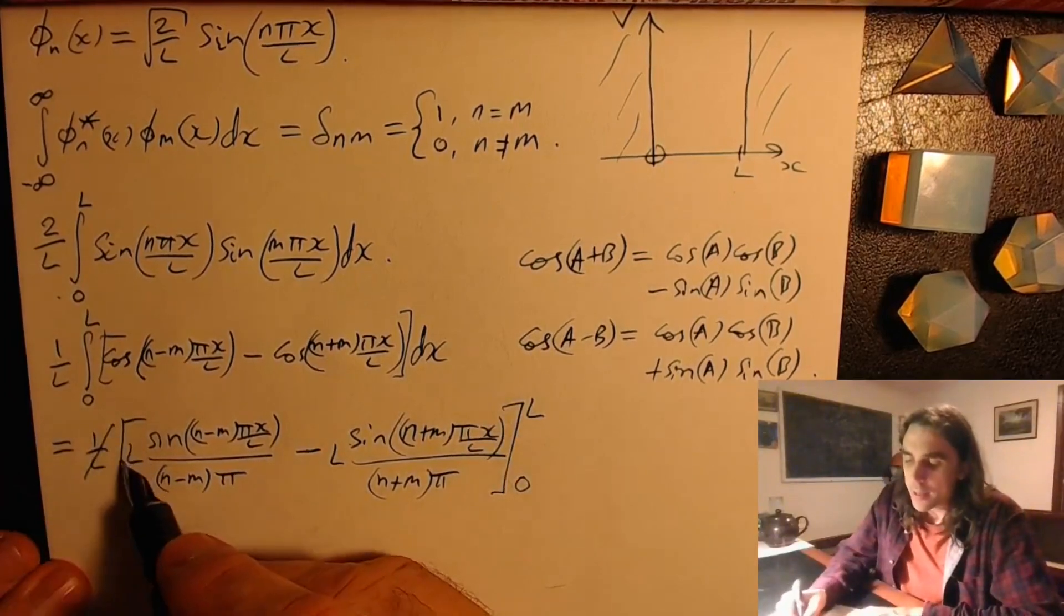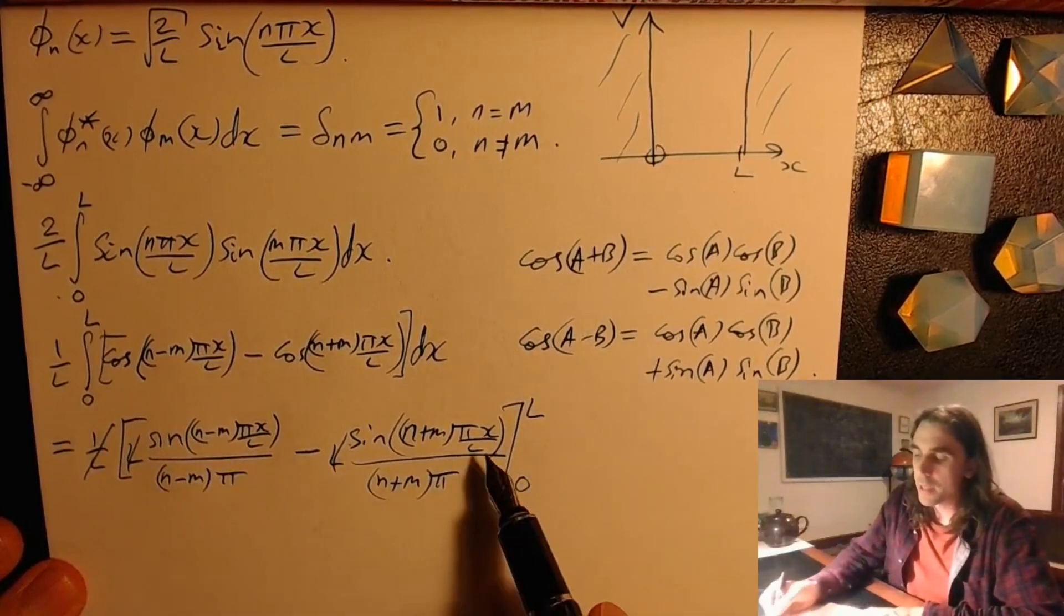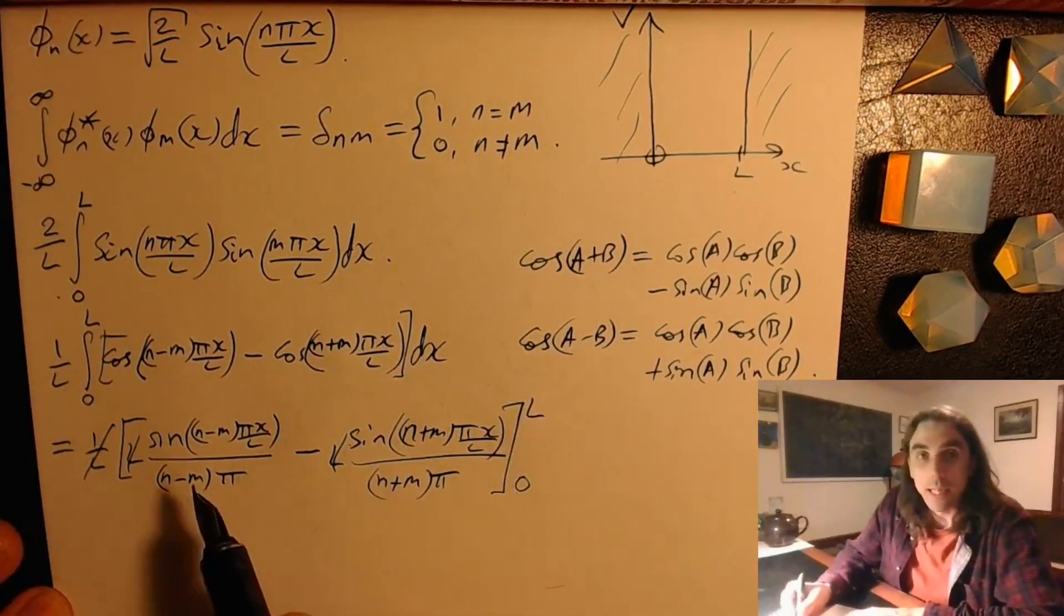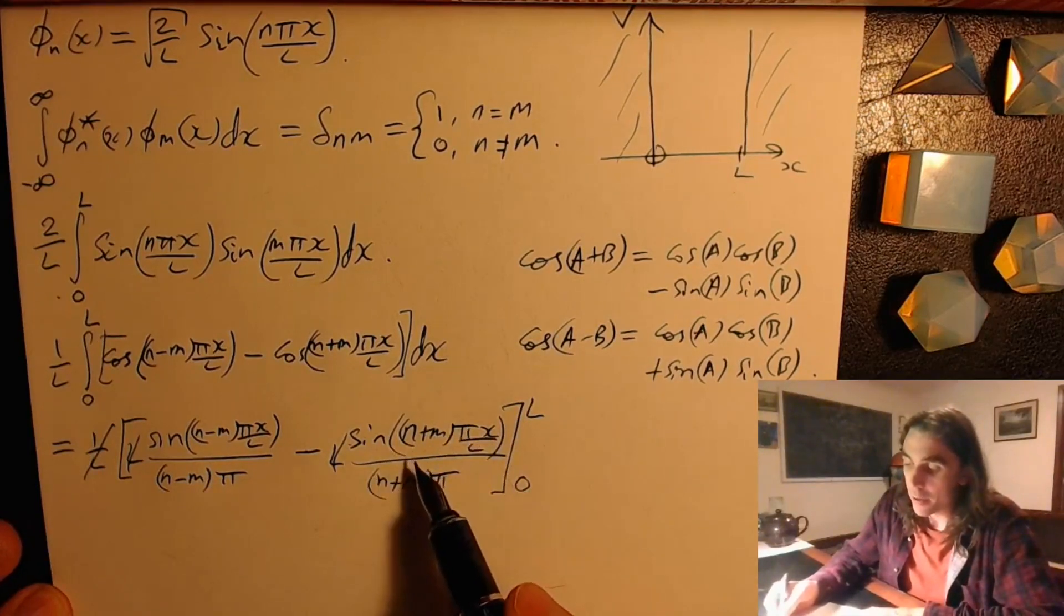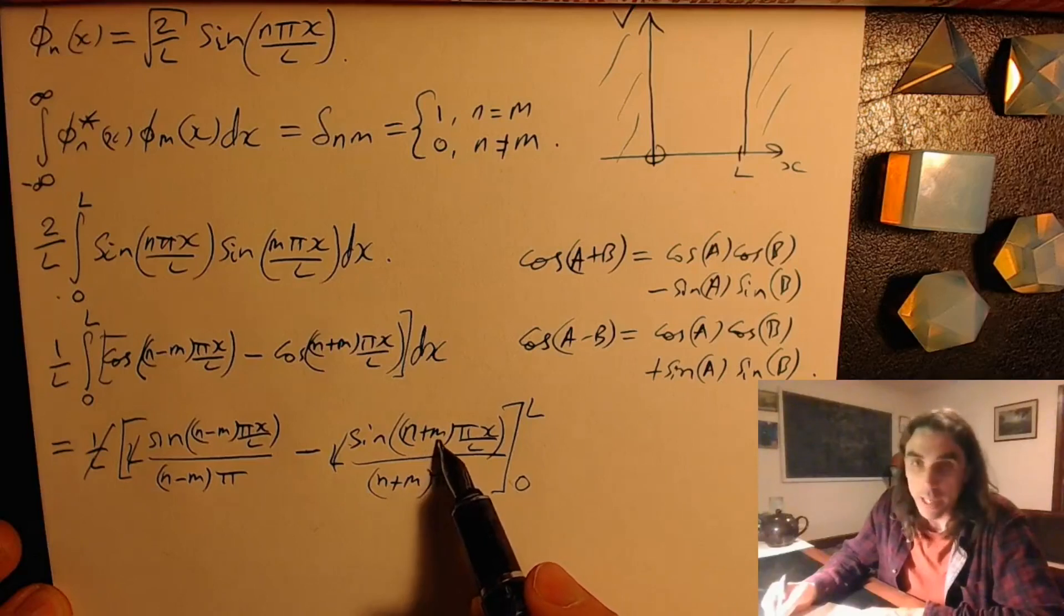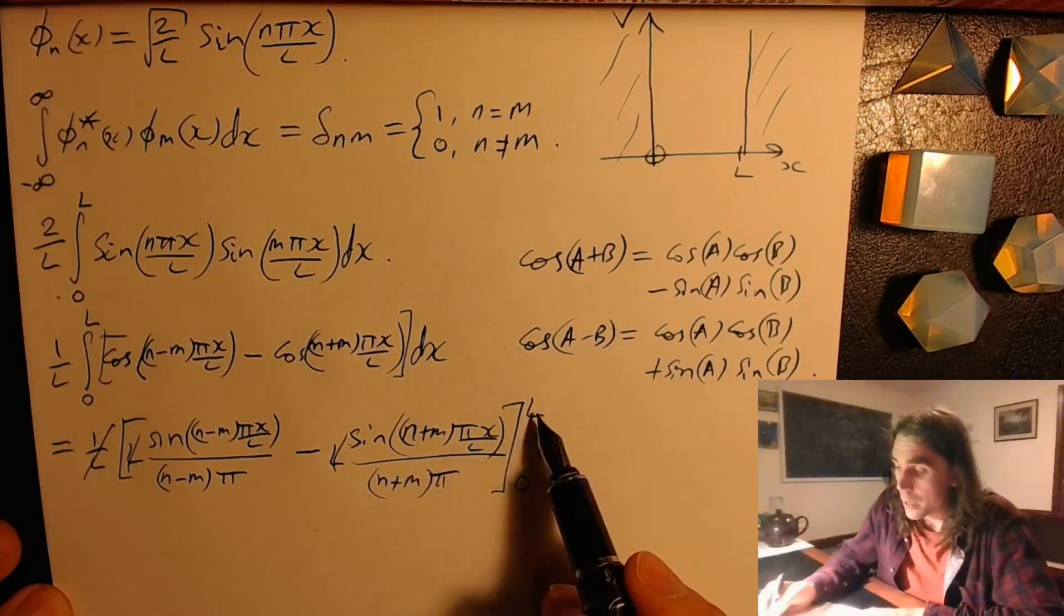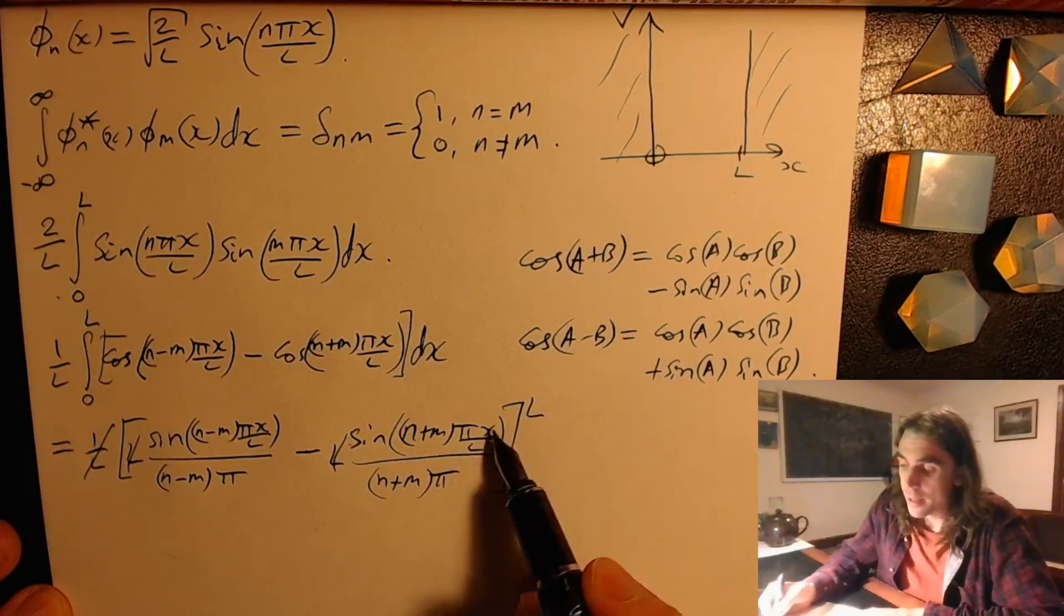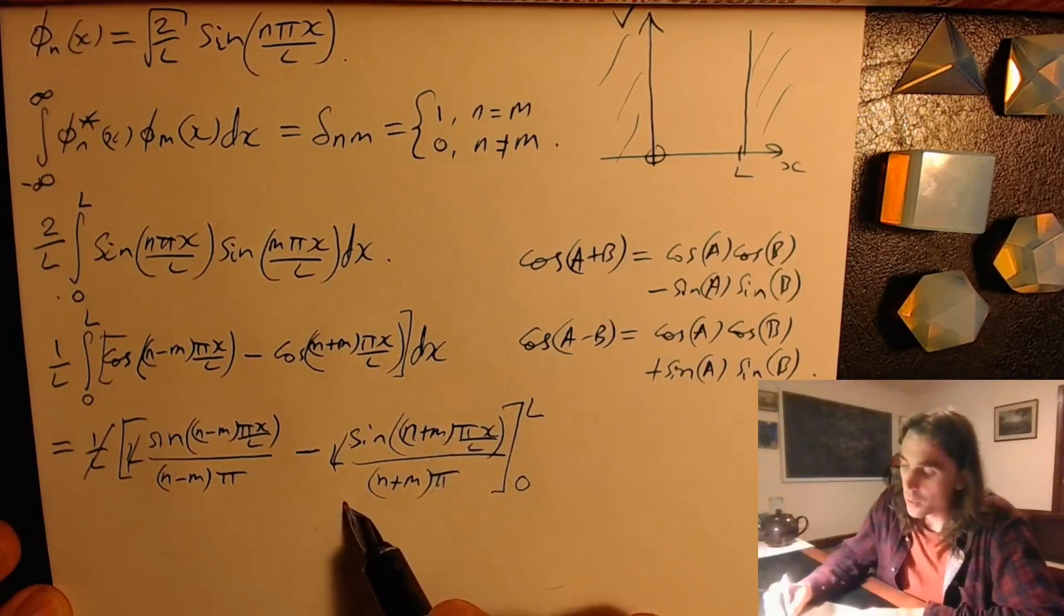Okay, well the L's cancel, so that's good news. When we stick sine of zero as zero, so the zero limit is always zero. When we substitute the L in, this one is always going to be zero, because n plus m for integer n and m is always an integer. The sum of two integers is an integer. And so this is times pi, substitute the L in here, these two cancel. So it's an integer times pi, sine of that is always zero. So this one disappears.